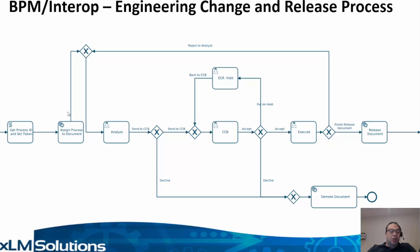These first two tasks will automatically take that object and assign it to the process. We will then go to a human task to analyze the document being attached and update information about it. This person can then decide whether to decline or reject it, or promote it.